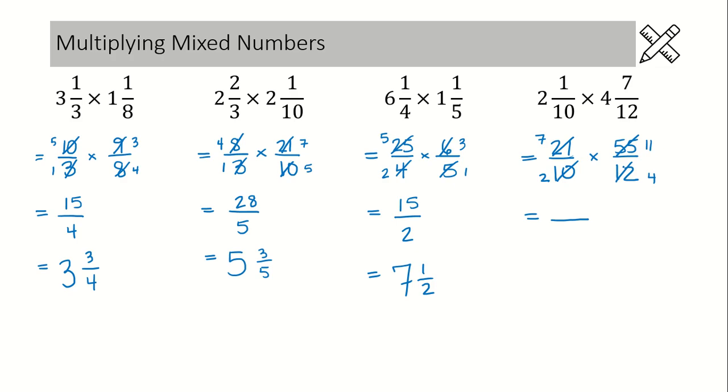No more common factors, so we can multiply straight across. We get 7 times 11 is 77, and then 2 times 4 is 8. Now this one is improper, so we need to go down to a proper mixed number.